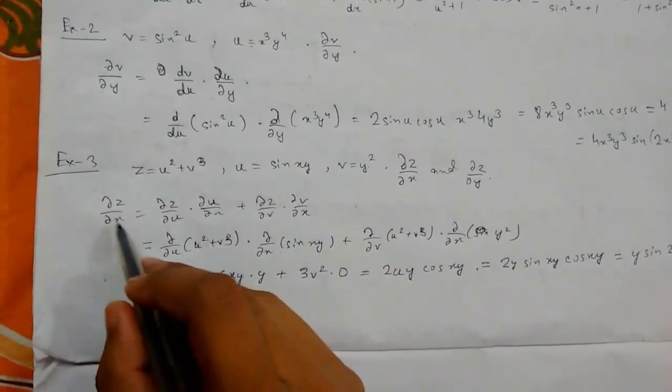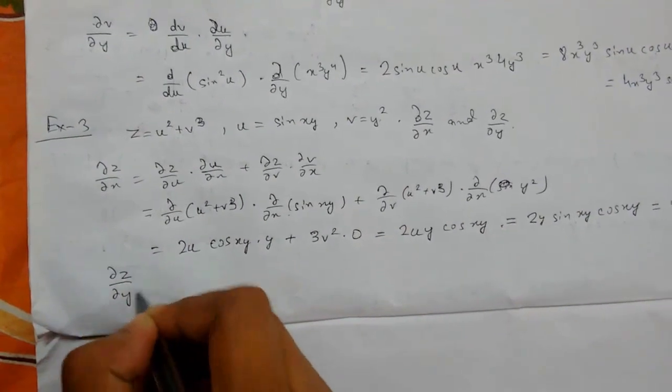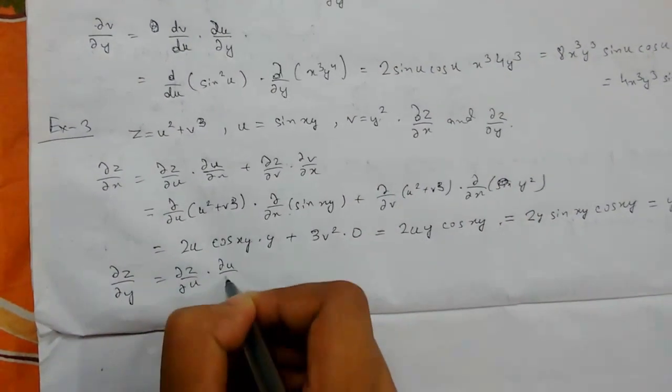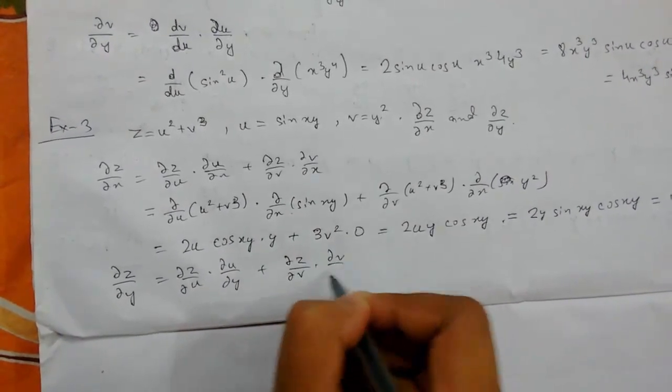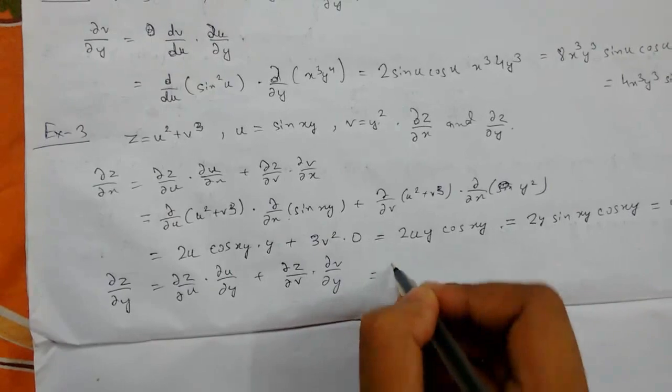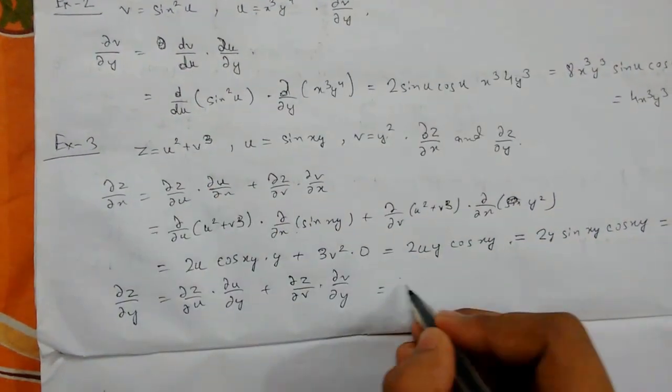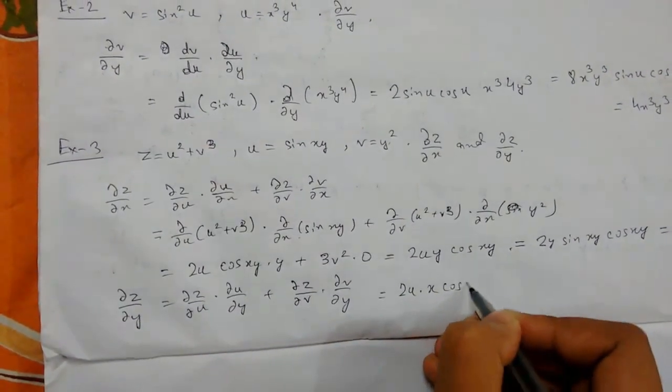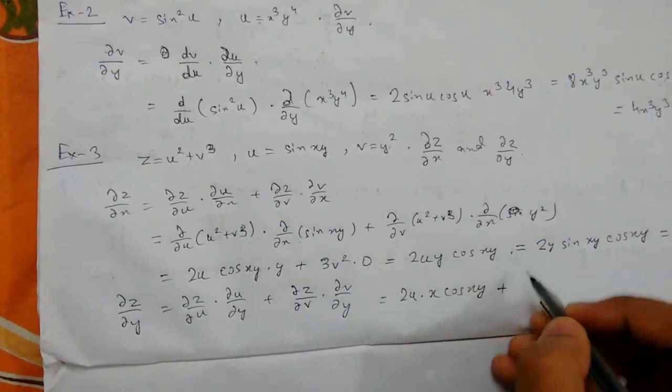Now ∂z/∂y: this will be ∂z/∂u·∂u/∂y + ∂z/∂v·∂v/∂y. Putting values we get 2u·x·cos(xy) (here x is constant) plus 2v·2y.